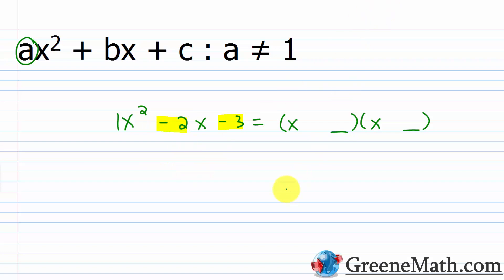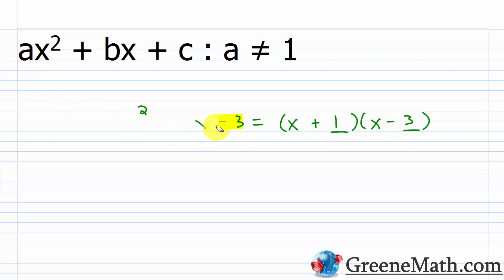I need two integers that give me a product of negative 3 and a sum of negative 2. For negative 3, it's either positive 1 and negative 3, or negative 1 and positive 3. Because I want a negative sum, I want negative 3 and positive 1. The outer would be negative 3x, the inner would be plus x, giving a sum of negative 2x. And 1 times negative 3 is negative 3. So that's the easier scenario.